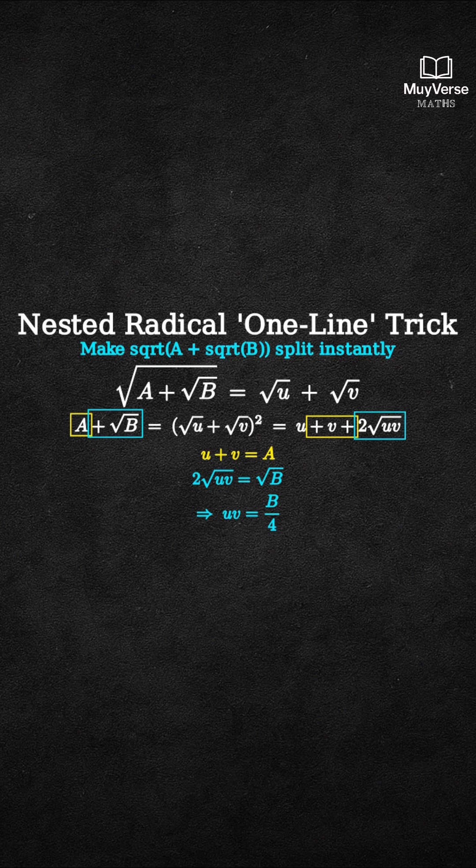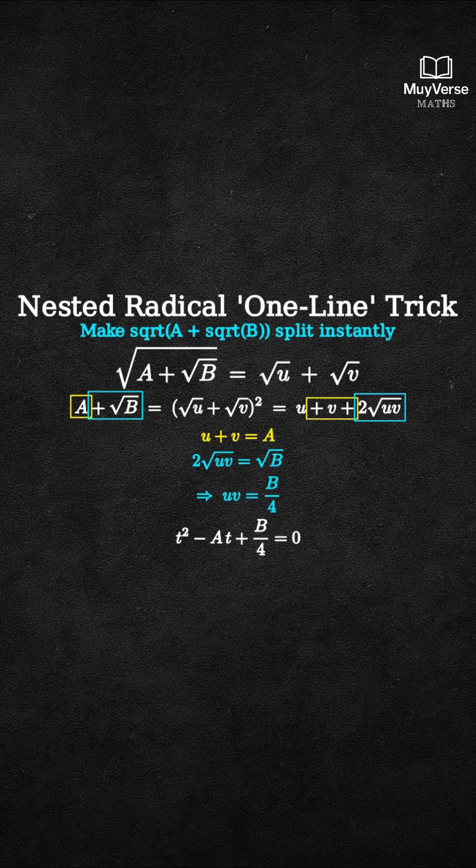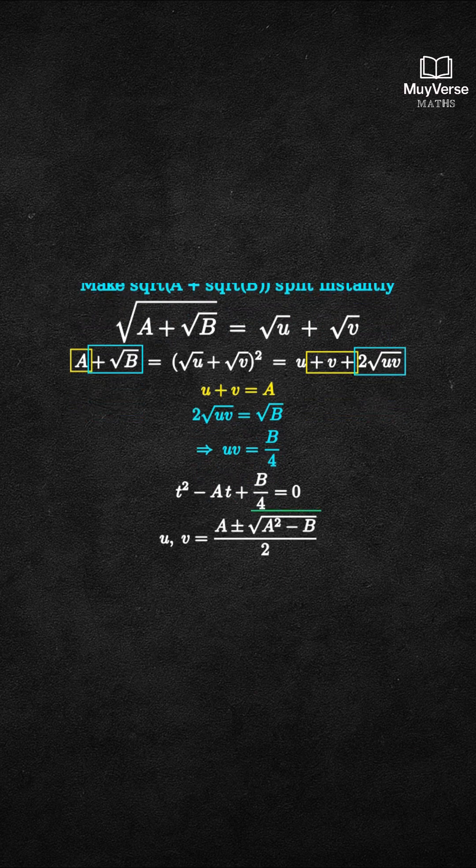Knowing the sum and the product, the unknowns u and v are the two roots of a quadratic in t. t squared minus at plus b over 4 equals 0. Apply the quadratic formula to get explicit u and v.